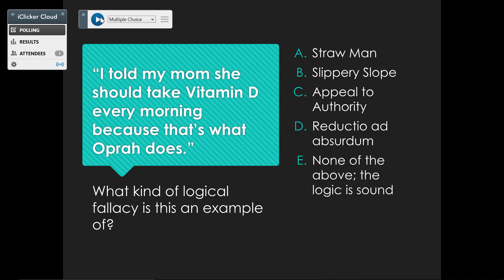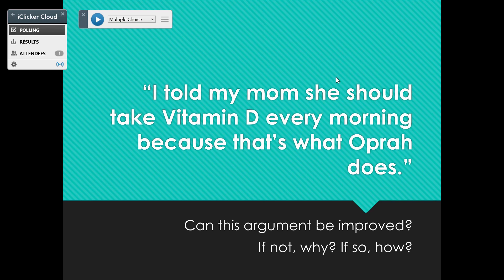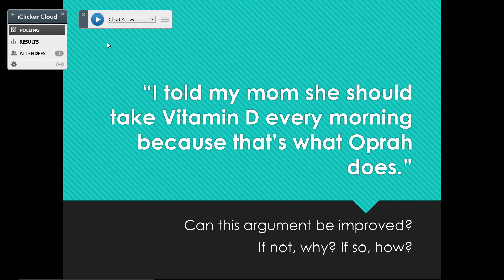Let's try another kind of polling question. This is an example of a short answer question. Go to the drop-down menu, click Short Answer, and then click the play button again. Each time you click this play button, it takes a screenshot of whatever you're displaying to your students, so make sure that you're sending your students the view you want them to see. The play button works almost like a camera shutter icon. You'll be able to see the time that's passed on the poll and how many students have responded. When you're satisfied, click the Stop button.